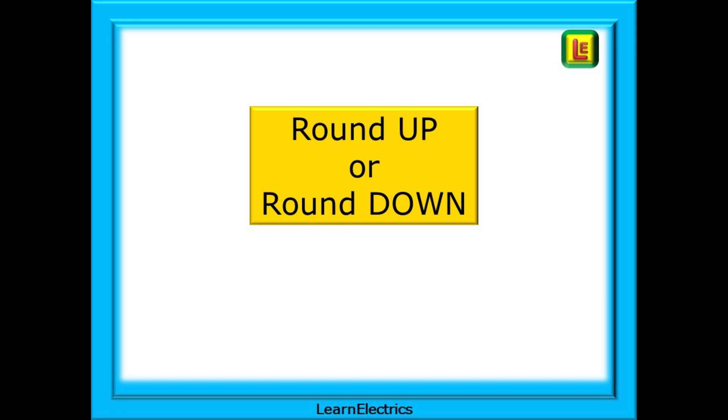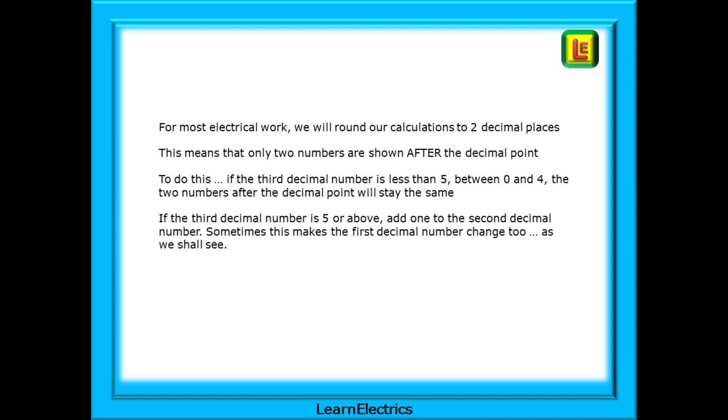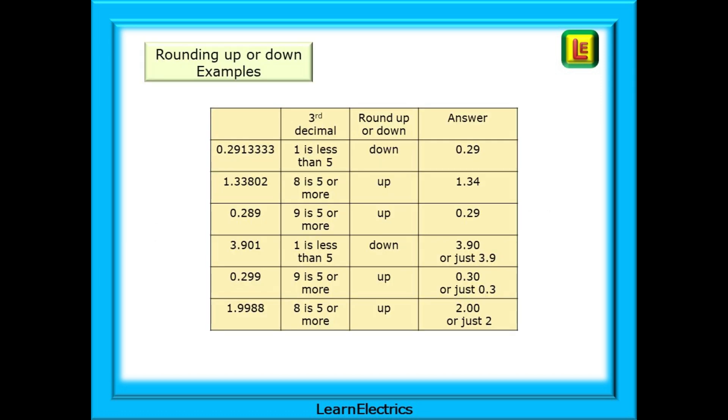Do we round up or do we round down? There is always so much discussion about this, and here we will follow the mathematical rules on rounding decimal places. For most electrical work, we will round our calculations to two decimal places. This means that only two numbers are shown after the decimal point. To do this, if the third decimal number is less than 5, between 0 and 4, the two numbers after the decimal point will stay the same. If the third decimal number is 5 or above, add 1 to the second decimal number. Sometimes, this makes the first decimal number change as well, as we shall see. Shown here are some examples of rounding up or down. If we are rounding to just two decimal places, we only need to look at the third decimal place. No further back than the third number to the right of the decimal point. This will tell us our next move.